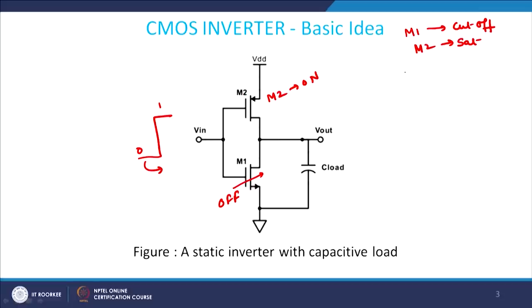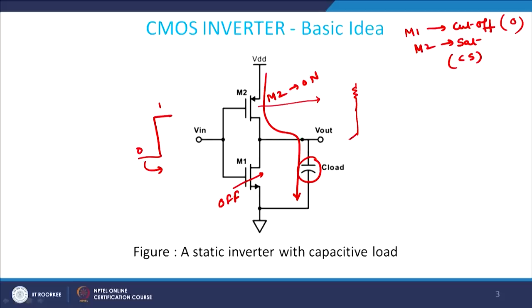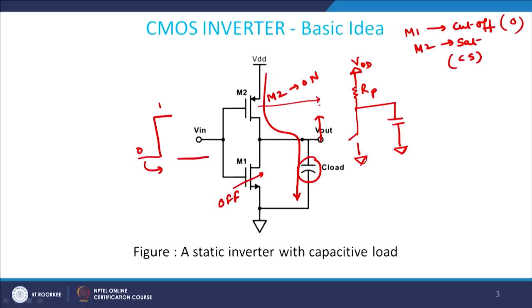Since M2 is on and M1 is cut off, CL will get charged through M2 — through the path VDD through M2 to CL. We can replace M2 by a simple resistance RP and M1 as an open switch. The capacitance is getting charged to a high value when the input is 0, which means the output voltage will go to a high value. So as long as your input is 0, the output will always be 1.